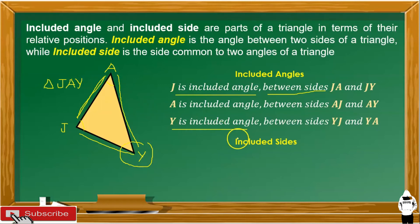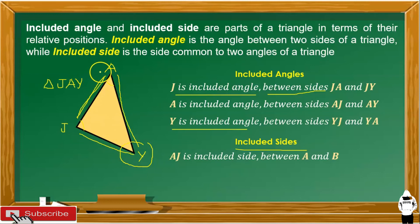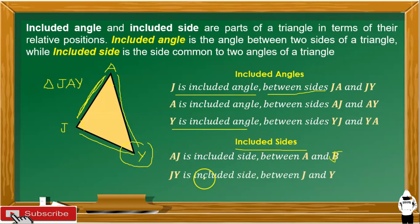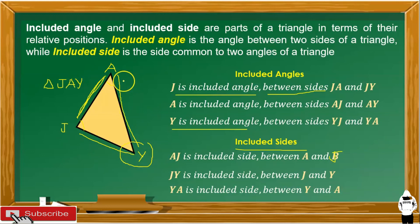Next, we look for the included sides. Side AJ is the included side between angles A and J. Side JY is the included side between angles J and Y. Side YA is the included side between angles Y and A. Those are the included angles and included sides based from triangle JAY.